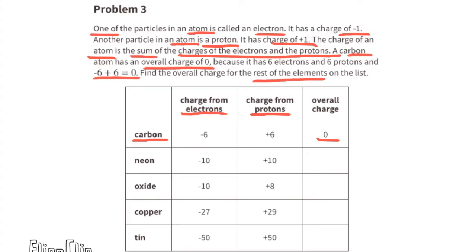Neon: negative 10 plus 10 equals 0; the overall charge is 0. Oxide: negative 10 plus 8 equals negative 2; the overall charge for oxide is negative 2. Copper: negative 27 plus 29 equals positive 2; the overall charge for copper is positive 2. Tin: negative 50 plus 50 equals 0; the overall charge for tin is 0.